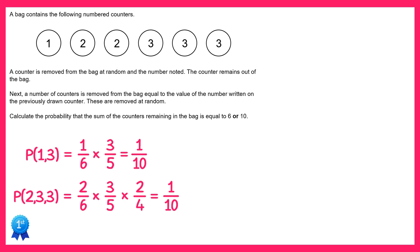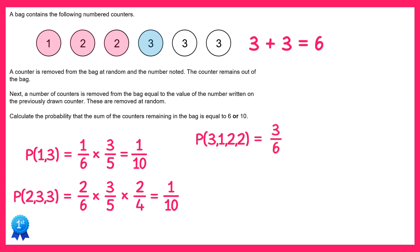Now that's all the possibilities when a 1 or a 2 comes out first. Now we'll look at what happens when a 3 comes out first — this time we're going to draw 3 more counters, leaving only 2 counters left. The only way to get a total of 6 with 2 counters remaining is to leave a 3 and a 3, so we must remove a 1, a 2 and a 2. Looking at the ordering: 3 first, then 1, then 2, then 2 — the probability is 3 over 6 times 1 over 5 times 2 over 4 times 1 over 3, which gives you 1 out of 60.